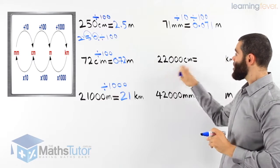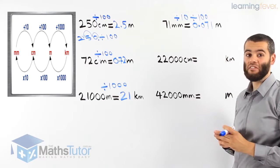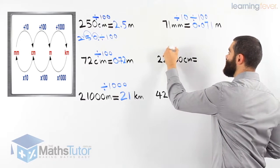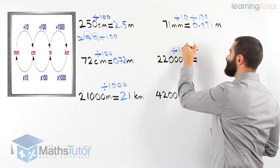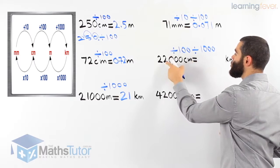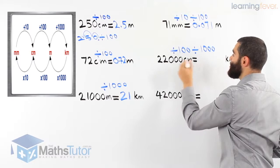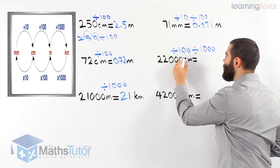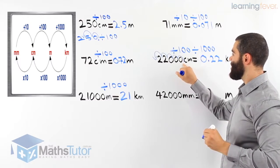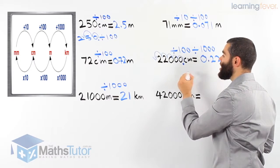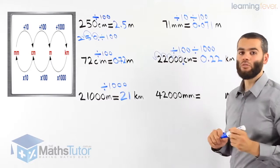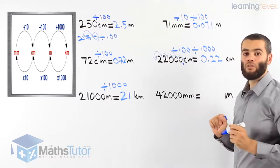Twenty-two thousand centimetres — how many kilometres? We're going from centimetres to metres and then to kilometres. So 22,000 centimetres divided by 100 gives metres, then divided by 1000 gives kilometres. Moving the decimal point left five places gives us 0.22 kilometres. So 22,000 centimetres is equal to 0.22 kilometres.